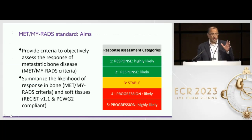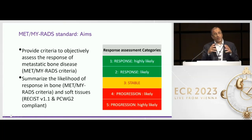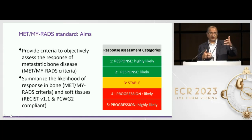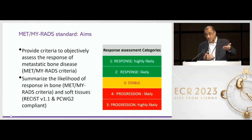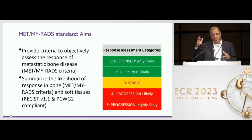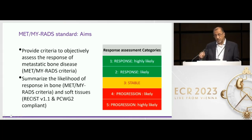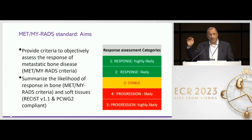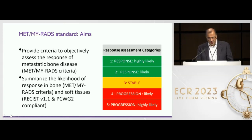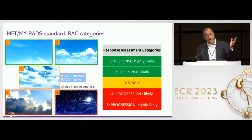We also want to assess the response of disease as best we can using objective criteria — these are called the METRADS criteria. These are a response assessment issue, slightly different from a characterization issue. We characterize response on the basis of what we call RAC — response assessment categories — and these go from 1 to 5.